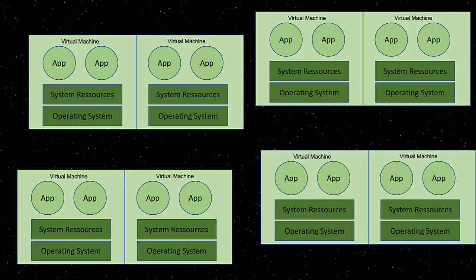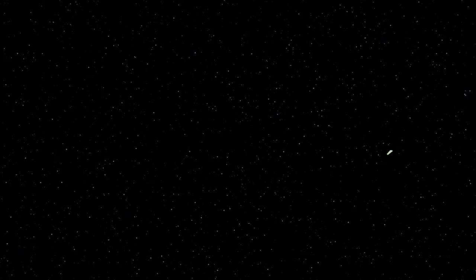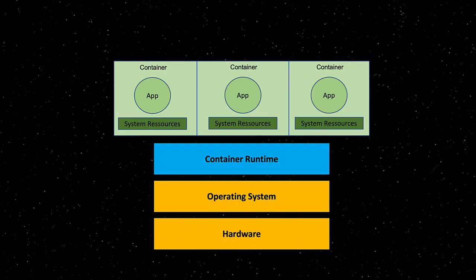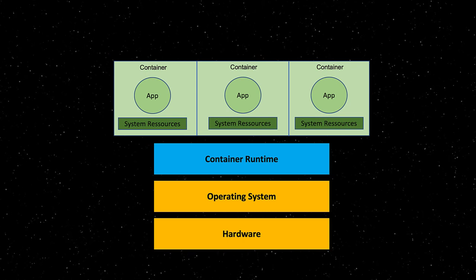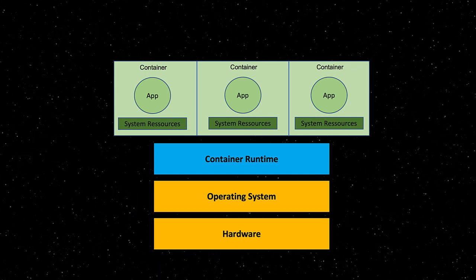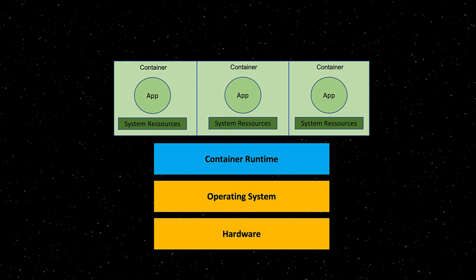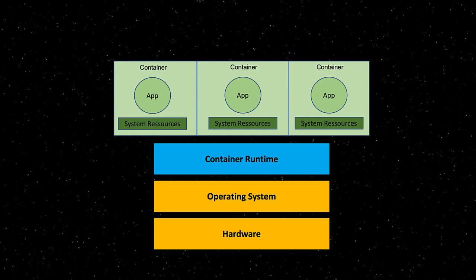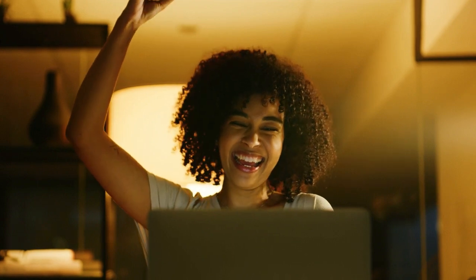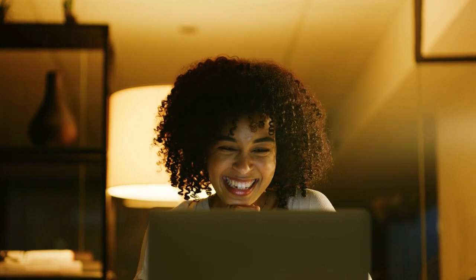With containerized applications, they all run on a container runtime, each in its own container, using their own file system, share of CPU, memory, and so on. They are decoupled from the underlying infrastructure, which makes the DevOps folks more relaxed because Kubernetes just starts up additional containers here and there if others run into issues without you even noticing.